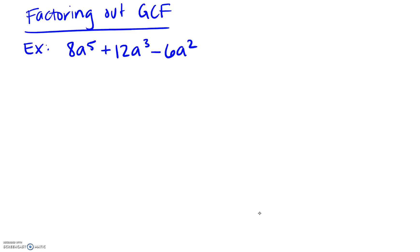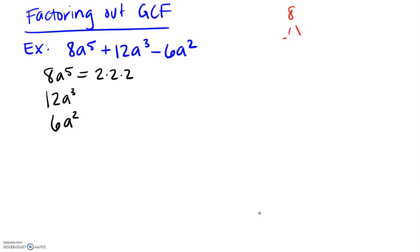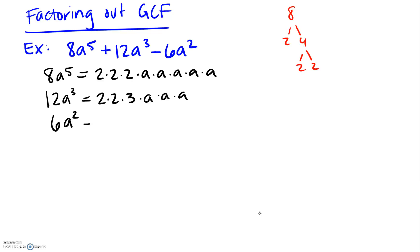If you're just getting used to this, the prime factorizations really help. Note that when writing out the prime factorizations, I'm not going to write the negative on the 6a squared — I'll just remember the sign pattern of positive, positive, negative when I finish. So: 8 is 2 times 2 times 2, with five a's. 12 is 2 times 2 times 3, with three a's. And 6 is 2 times 3, with two a's.